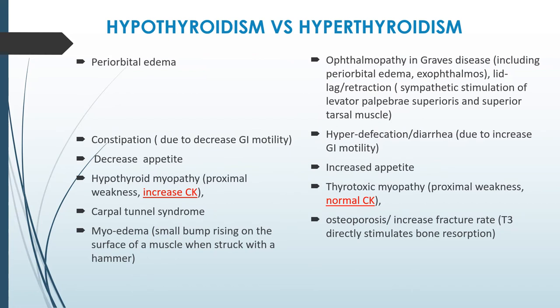In the ocular findings, hypothyroidism presents with periorbital edema. In hyperthyroidism, only in cases of Graves' disease, there is ophthalmopathy with periorbital edema, exophthalmos, and lid lag retraction. This is mainly due to sympathetic stimulation of the levator palpebrae superioris and superior tarsal muscle — also known as Müller's muscle — which functions to maintain the elevation of the upper eyelid.